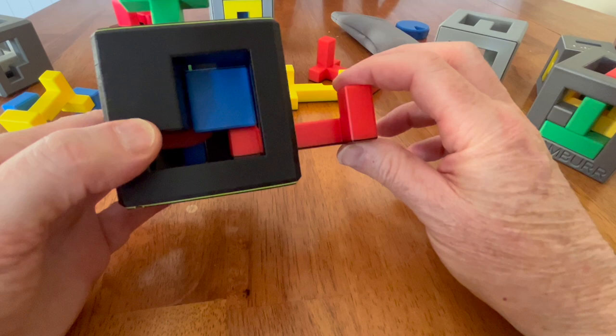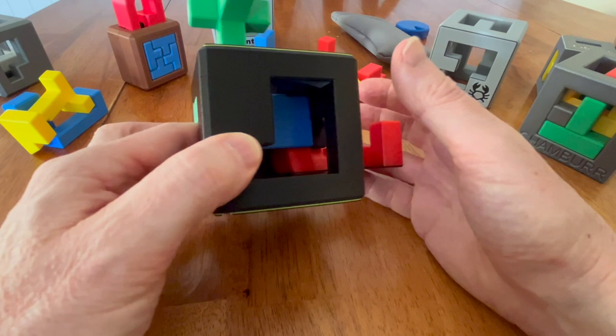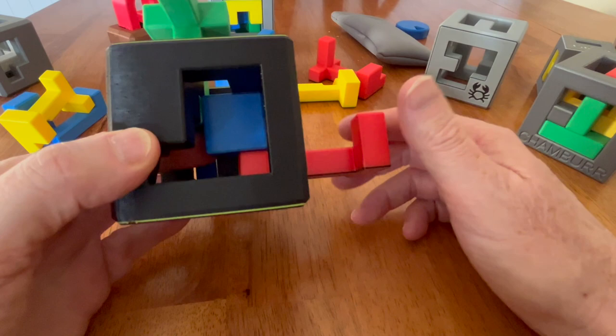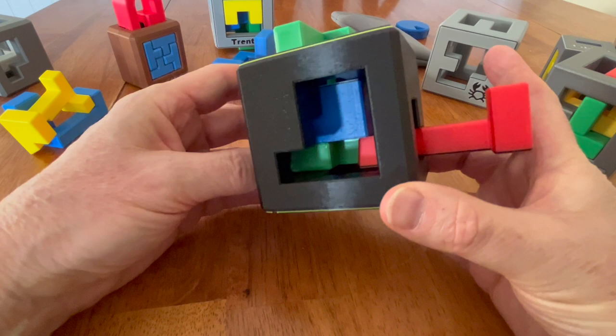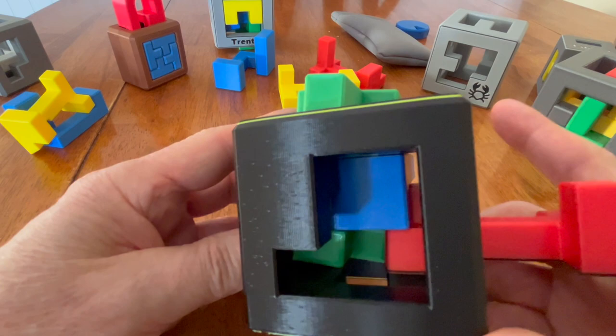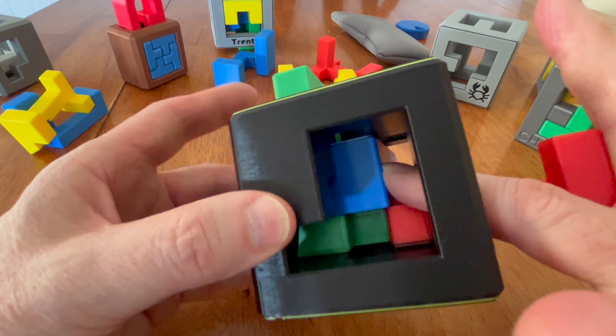So we're going to move the blue piece out of the way. And in order to rotate this red piece, you have to have a free slot at the right hand side. So we've got to get that blue piece out of the way. And we're going to move the green piece down. And the blue piece over top of it.